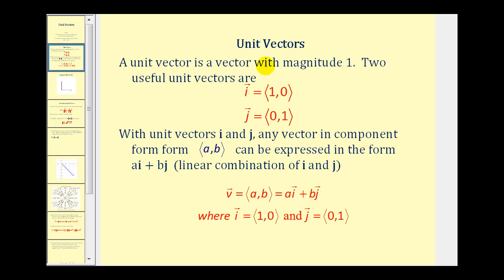A unit vector is a vector with magnitude or length one. Two very useful unit vectors are the i vector and the j vector. Vector i is the vector (1, 0), meaning it's one unit along the positive x-axis. Vector j is a vector one unit along the positive y-axis. With vectors i and j, any vector in component form (a, b) can be expressed as a times vector i plus b times vector j, and this is often referred to as a linear combination of i and j.